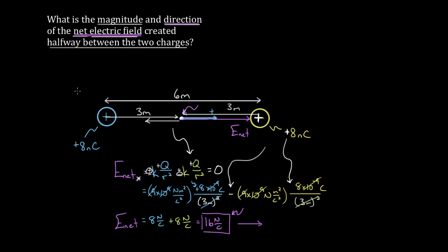To recap: to find the total electric field from multiple charges, draw the field each charge creates at the point of interest. Use the formula to get the magnitude of each contribution. Then decide whether those contributions are positive or negative based on the direction the field points — not the sign of the charge. Add up the contributions to get the total net electric field at that point.